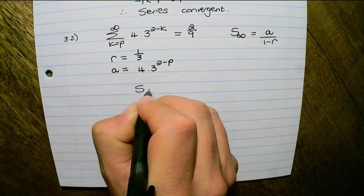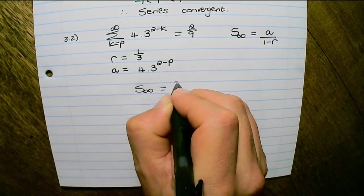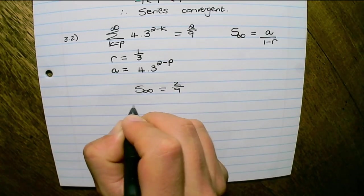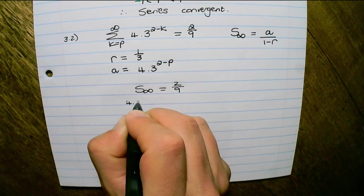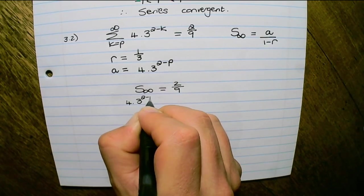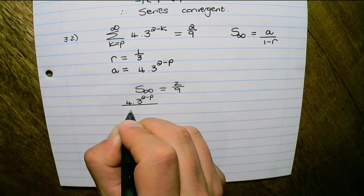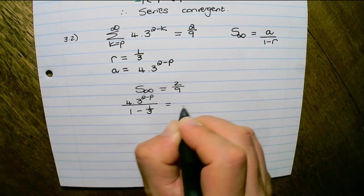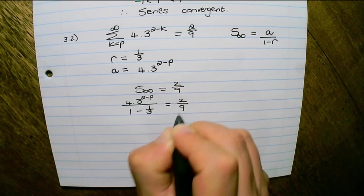So the sum to infinity equals 2 over 9. That is the same as saying a, which is 4 times 3 to the power of 2 minus p, over 1 minus the ratio, which is a third, equals 2 over 9.